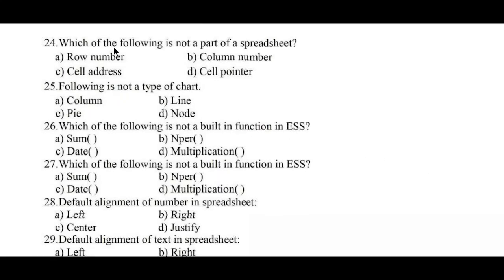Question number 24: Which of the following is not a part of a spreadsheet? Option A: row number, B: column number, C: cell address, D: cell pointer. Columns consist of alphabets, so column number is not a part of a spreadsheet; Option B is the right answer. Question number 25: Which of the following is not a type of chart? Option A: column, B: line, C: pie, D: node. Option D, node, is not a type of chart.